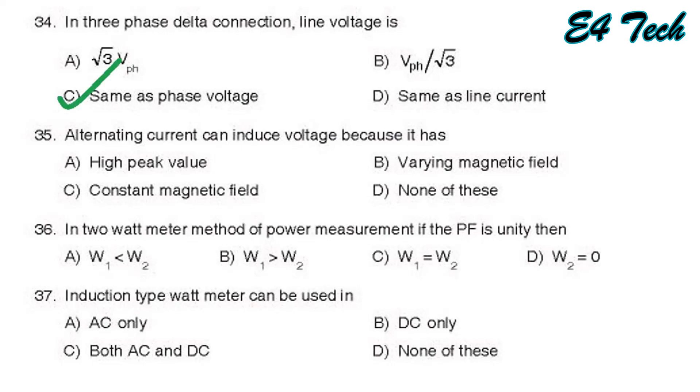The alternating current can induce voltage because it has high peak value, varying magnetic field, constant magnetic field, none of these. Alternating current has a varying magnetic field. That is option B, varying magnetic field.